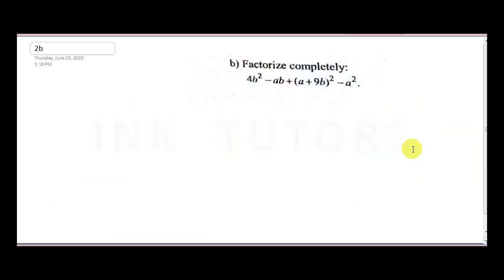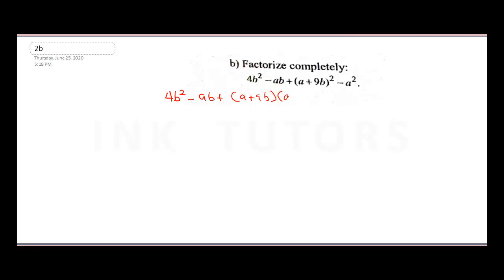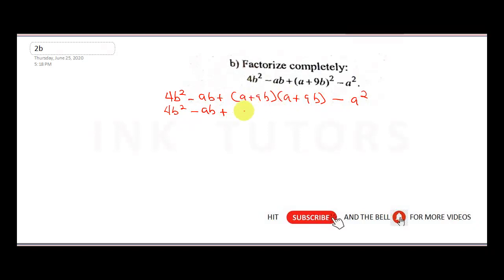Question 2b says: factorize completely. We expand the expression to get 4b² − ab + (a + 9b)² − a². Expanding the bracket, we write (a + 9b) twice: a × a = a², and a × 9b = 9ab.